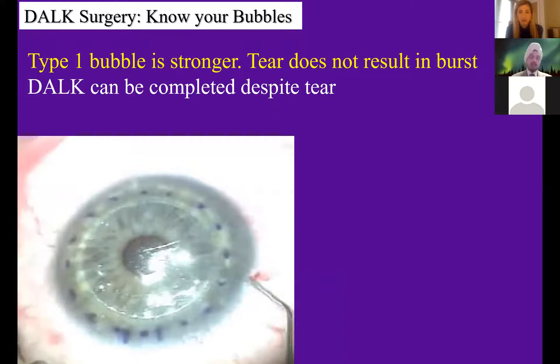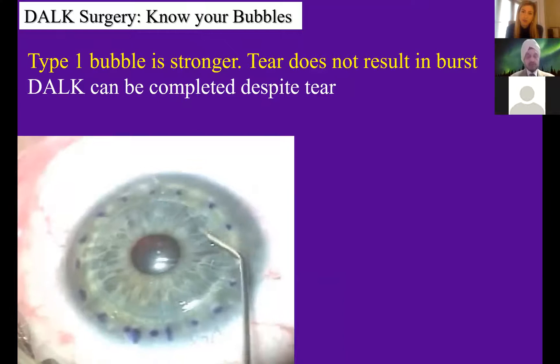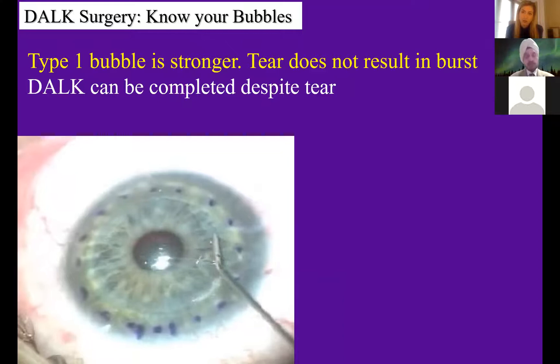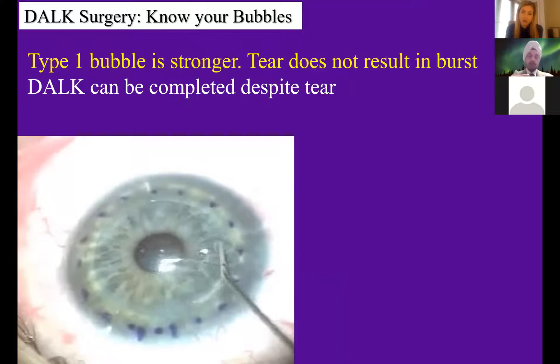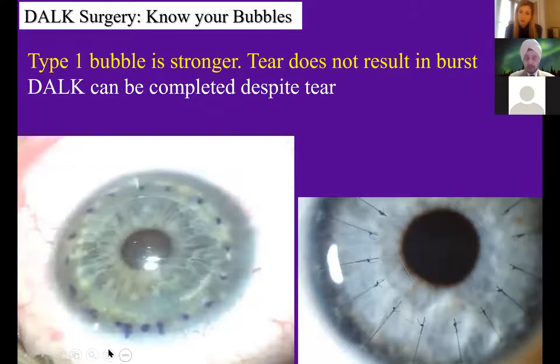Here is an example where we got a type 1 bubble with a tear. When you get a tear in a type 1 bubble, it doesn't burst — the tear stays, and despite putting a cannula through the tear, you can complete the DALK operation successfully because the pre-Descemet's layer is tamponading and supporting the Descemet's membrane. You may need to inject some air in the anterior chamber, just as you do with endothelial keratoplasty to keep the torn edges opposed to the donor cornea. Afterwards there was a little wrinkle in the pre-Descemet's layer/Descemet's membrane, but the visual axis was very clear.